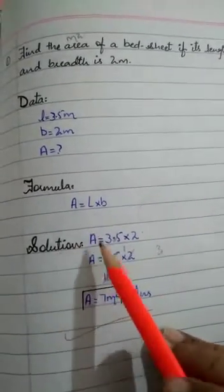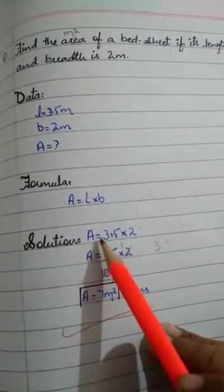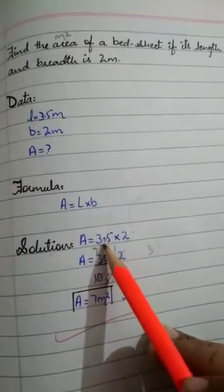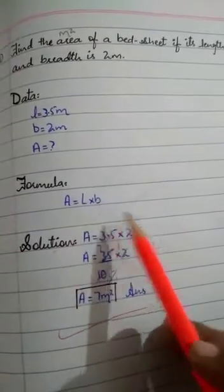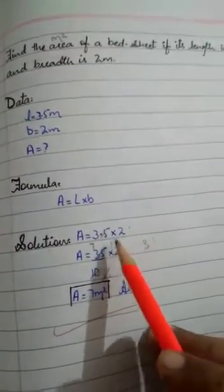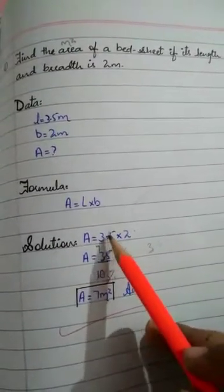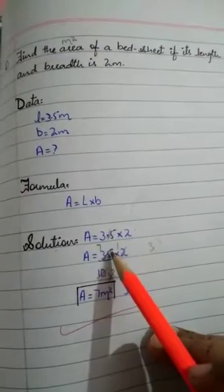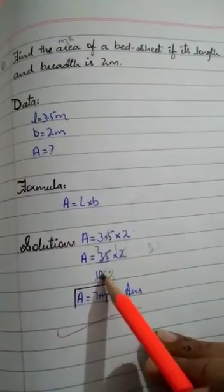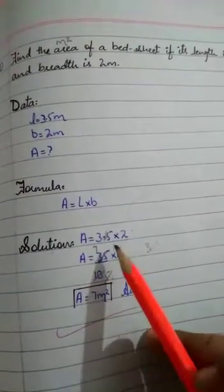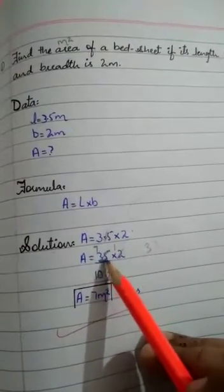Solution heading is A equals L times B. The length is 3.5, multiply breadth, which is 2. Now we remove this decimal. We know that decimal is removed by multiplying by 10.